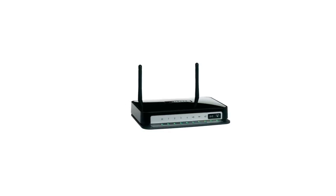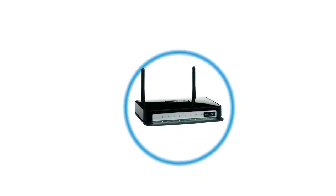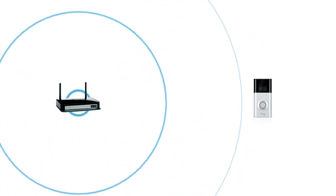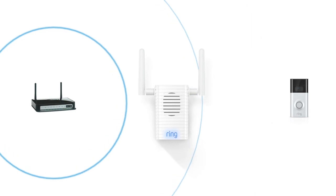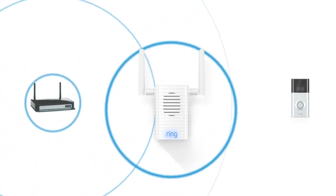Second, Chime Pro acts as a Wi-Fi extender. If a Ring device is installed far away from your Wi-Fi router, it may not receive a strong enough signal. Adding a Chime Pro in between helps to strengthen the signal and improve performance.